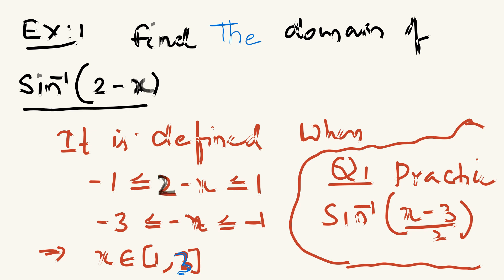So: -1 ≤ 2 - x ≤ 1. Adding -2 to both sides: -3 ≤ -x ≤ -1. Multiplying by -1 (reversing inequalities): 1 ≤ x ≤ 3. So therefore, the domain of this function is x ∈ [1, 3], where both 1 and 3 are included. So this is one example.